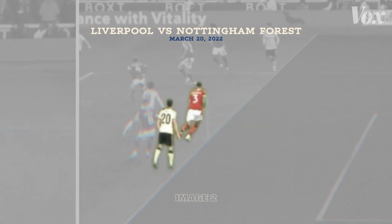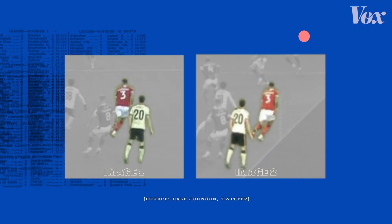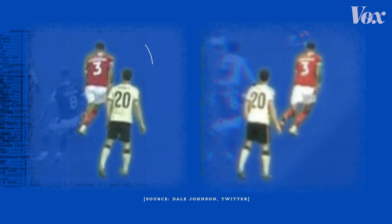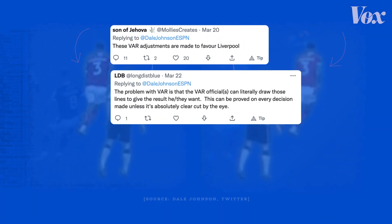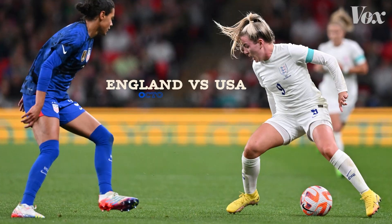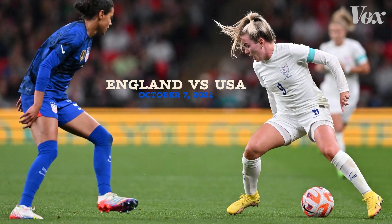These two images from the March 20th game between Liverpool and Nottingham Forest show the same moment in time from two slightly different perspectives. In the image on the left, number 20 looks like he's in front of number three, but on the right it looks like their positions are inverted. If audience members only see an angle they feel is uncompelling, it can leave them unsure that the right call was made.